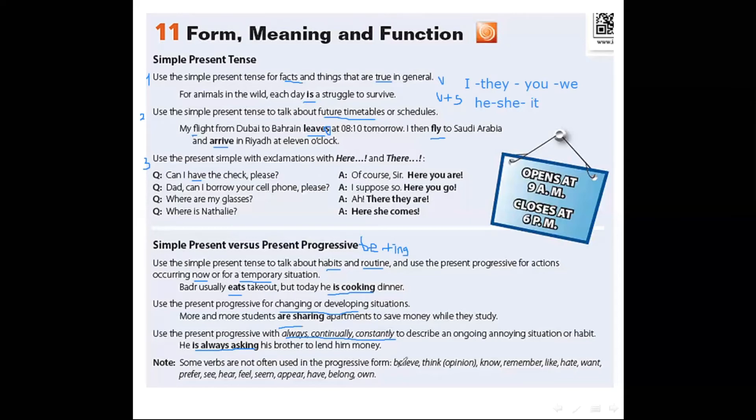For example, he is always asking his brother to lend him money. We should take care of some verbs which are not often used in the progressive form. What are they? Please underline them. Believe, think, know, remember, like, hate, want, prefer, see, hear, feel, seem, appear, have, belong, and own. These verbs can't be followed with present progressive. Can't be followed with ing. It's used in simple present tense. You write the notes.